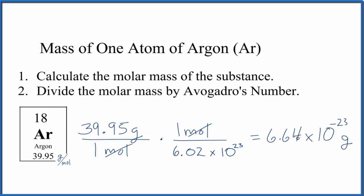If you wanted this in kilograms, just divide this by a thousand. You'd end up with 6.64 times 10 to the negative 26. This number makes sense because atoms are really small, so it should be a really small number.